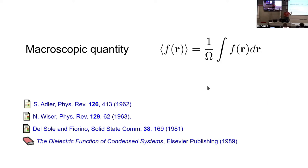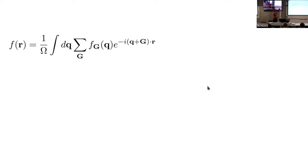For example, if you are working in real space for a molecular system, this function f(r) could be the dipole operator, and by integrating over it you obtain the absorption coefficient for a finite system. Everything becomes more complicated when we deal with an infinite system — but not so complicated, as we'll see.